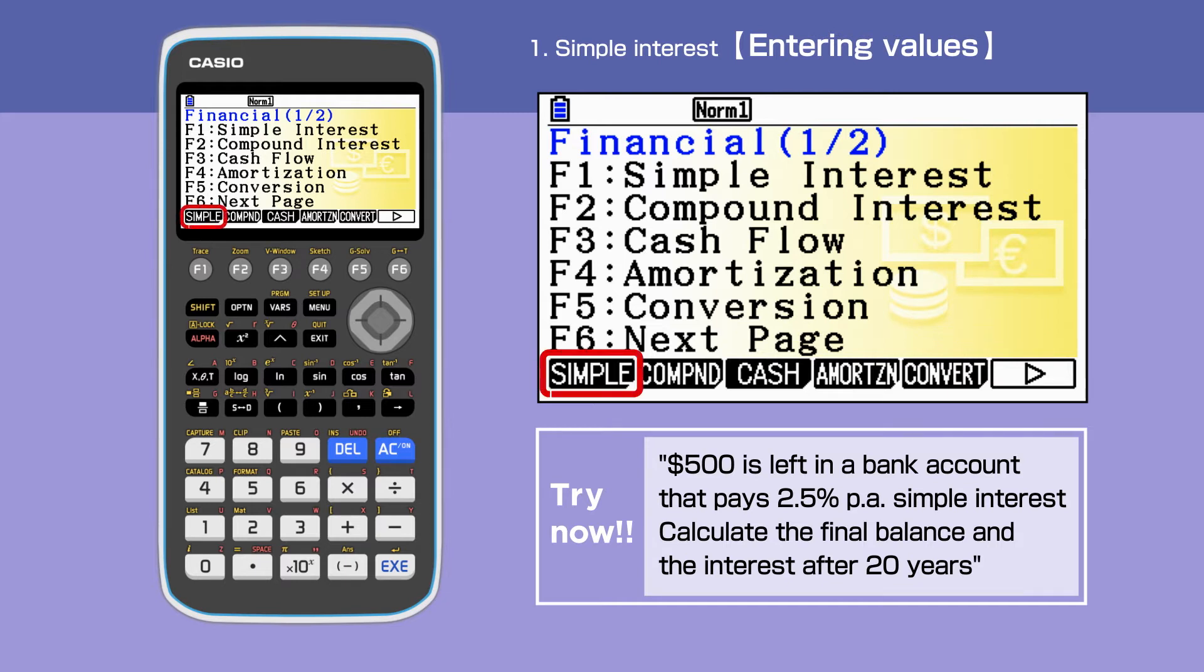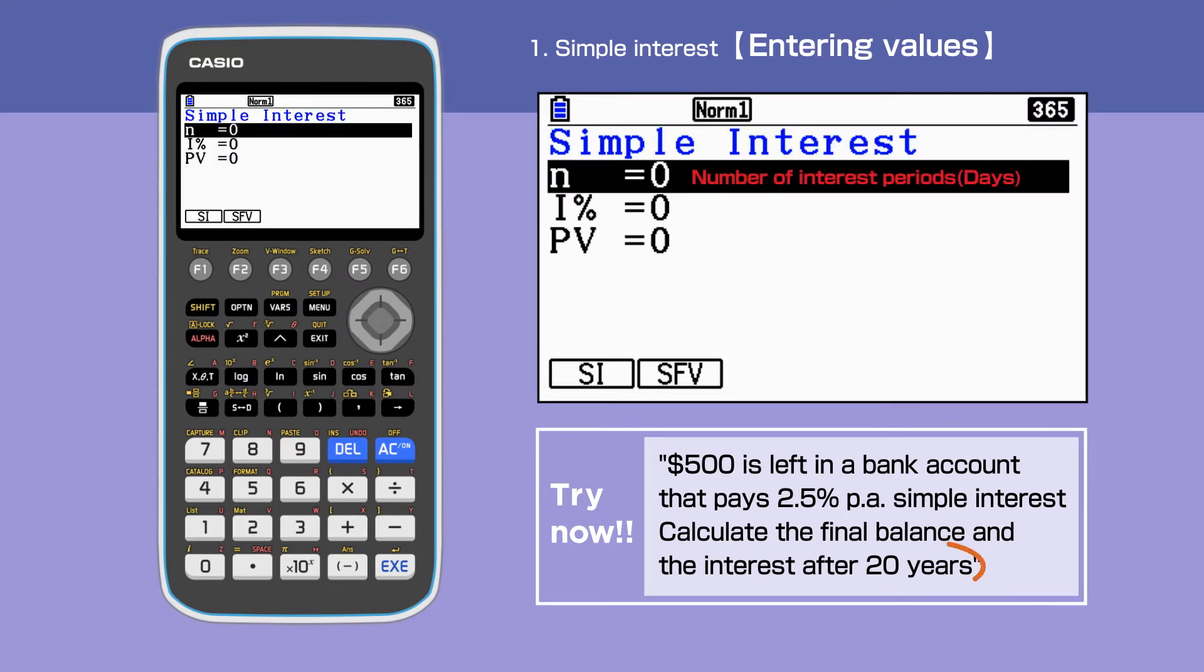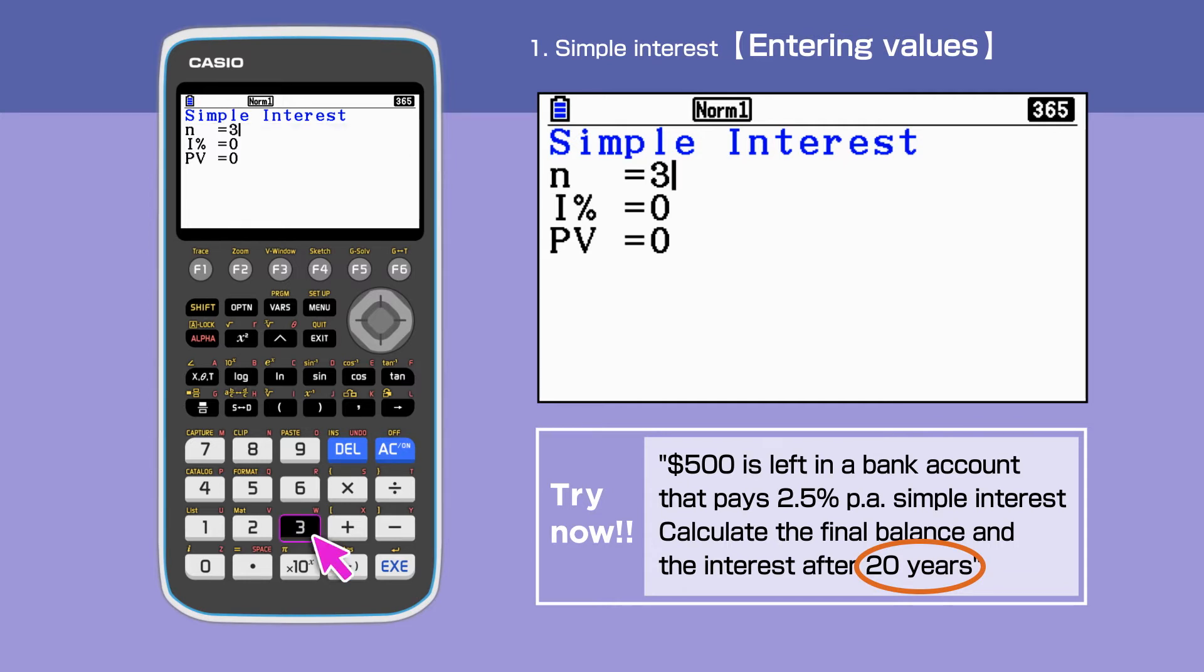Press F1 and select simple interest. The unit for N is day for simple interest. We enter N equals 365 times 20.